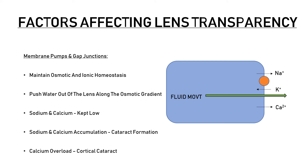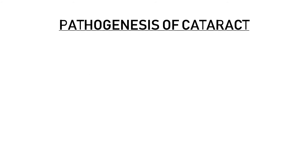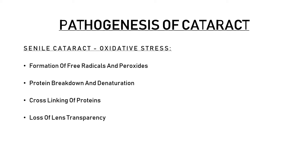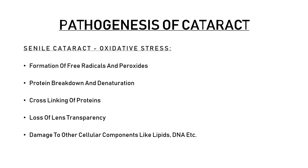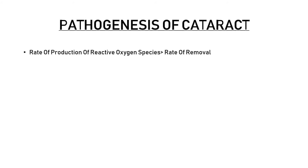The type of cataract most commonly associated with calcium overload is cortical cataract. The most important factor implicated in the development of cataract is oxidative stress. Oxidative stress leads to the formation of free radicals and peroxides that cause breakdown and denaturation of proteins, cross-linking of proteins, and loss of lens transparency. These free radicals can also damage other cellular components like lipids and DNA. Oxidative stress also causes direct damage to the lens membrane, leading to loss of membrane pump function. Cataract formation occurs when the rate of production of reactive oxygen species exceeds the rate of their removal.